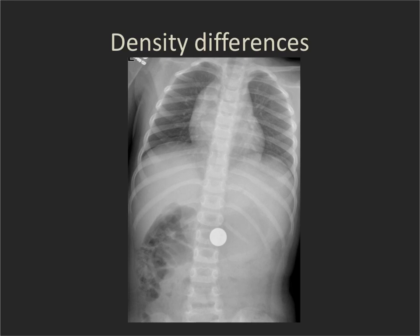The reason you have this interface is because of density differences. On radiographs, there are five dominant densities. The first is air, seen here in the lung and in the bowel. The second is fat — we don't see much on the chest, but a little along the lateral abdomen. Next is soft tissue density, such as the liver and mediastinum. Then bone — the vertebral bodies and ribs — and finally metallic densities, like this coin swallowed by this child.